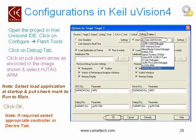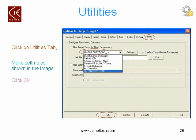You need to make some initial configurations. Go to the Configure menu and select Configure Flash Tools, which opens a dialog box. Go to the Debug tab, and on the right pane select Use H JTAG Cortex-M3 — this is for the LPC1768 controller — then click OK. One more setting: go to the Utilities tab and again select Use Target Driver for Flash Programming as H JTAG Cortex-M3. This is specifically for the LPC1768 controller. Click OK.